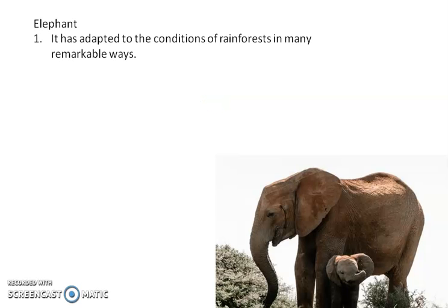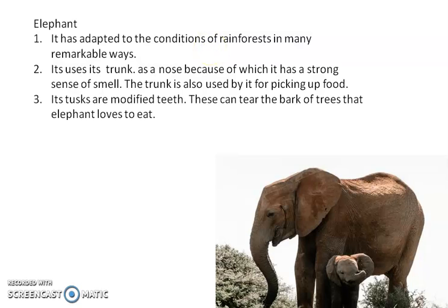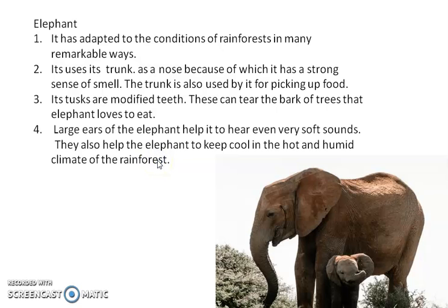The elephant is also adapted to the conditions of the rainforest. It has a long trunk which serves as a nose, giving it a strong sense of smell; the trunk is also used for picking up food. Elephants have tusks, which are modified teeth used to tear the bark of trees, as they love to eat bark. They have large ears which they fan — moving them in the direction of sound — and in the hot and humid tropical climate, they fan their ears to cool their body.